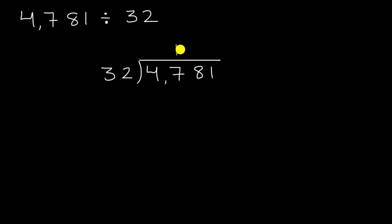And if you're saying, how did Sal know that? Well, just remember, two times 32 would be 64. That's more than 47. So 32 goes into 47 one time. Now we multiply one times 32. One times two is two. One times three is three. You knew that one times 32 is 32.